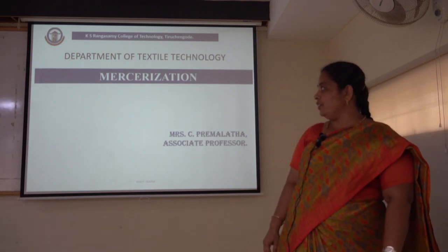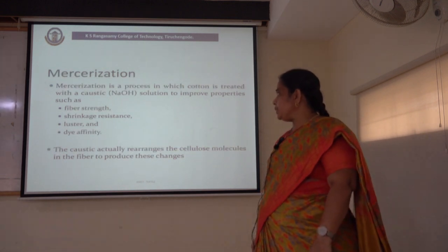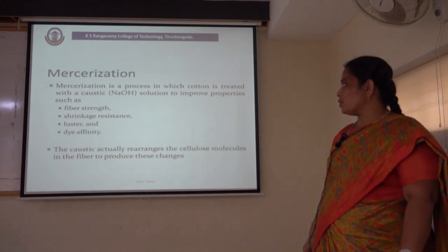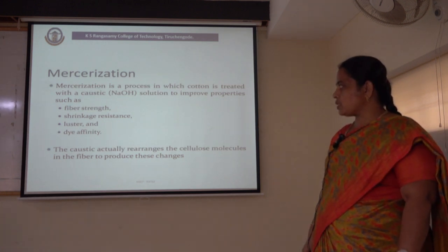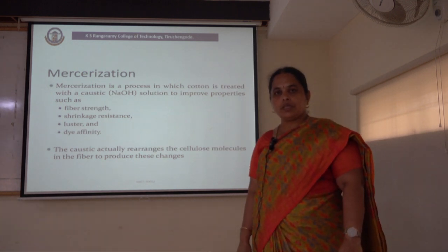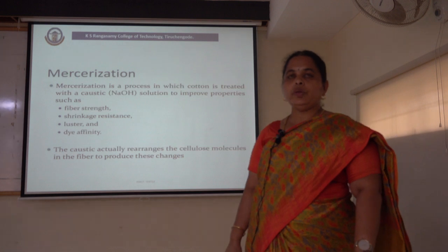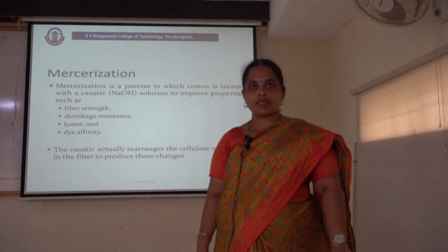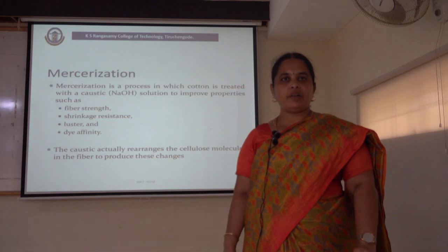Hi, my dear students. Today we are going to discuss about mercerization. Mercerization is a process in which cotton is treated with caustic, especially sodium hydroxide solution, to improve properties such as fiber strength, shrinkage resistance, luster, and dyeability. This mercerization process is especially done for cotton material to enhance dyeability and the luster of the textile material. We do not do mercerization for any other textile material apart from cotton.